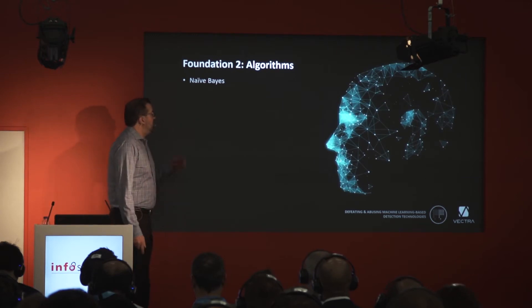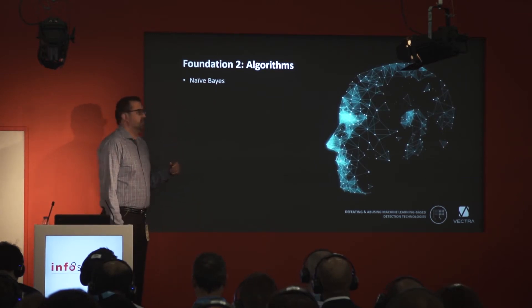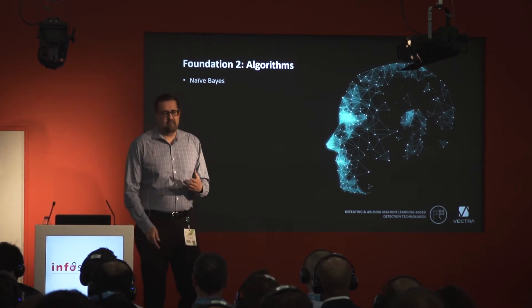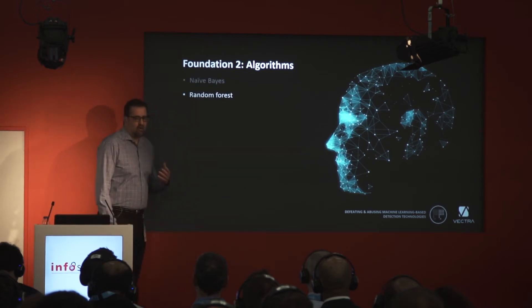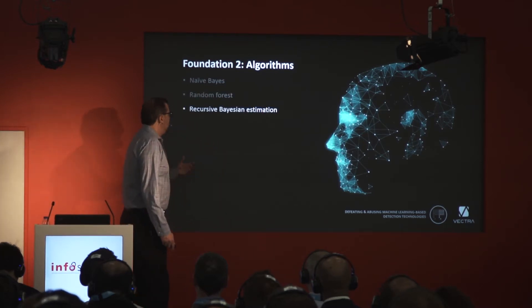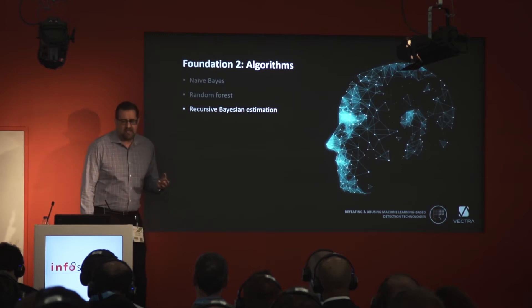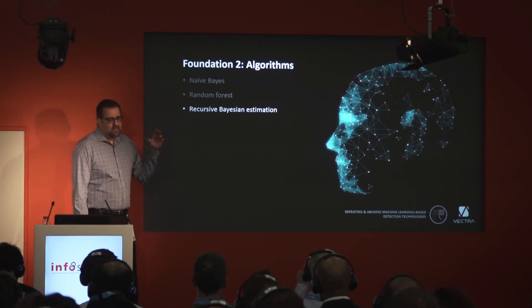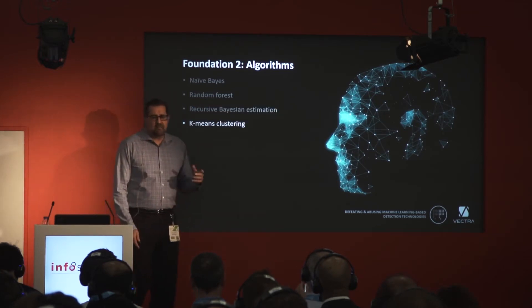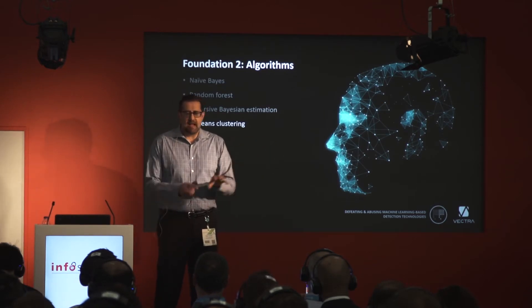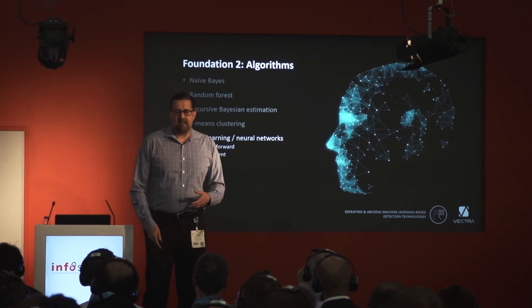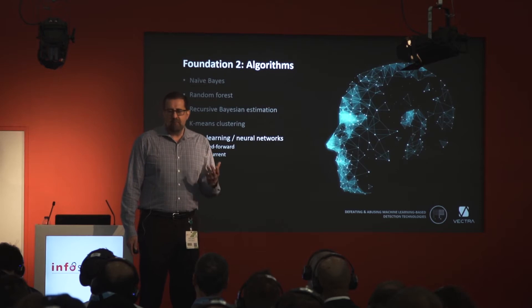There are lots of different algorithms. Naive Bayes is kind of the core building block that a lot of machine learning has been built around over the years. There are decision trees, random forest being the most common. There is recursive Bayesian estimation, where you use Bayesian techniques in a recursive, feedback-on-itself way. K-means is the most common clustering technique, used to cluster data and find outliers. Deep learning is the in-vogue method of the last few years — a reboot of neural networks.